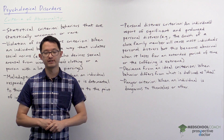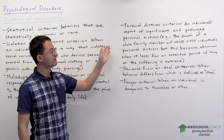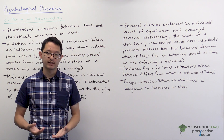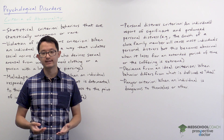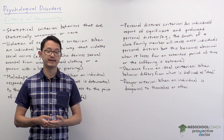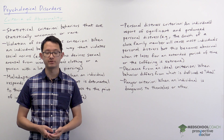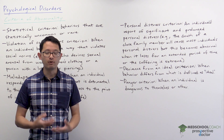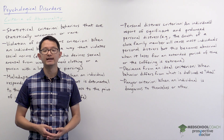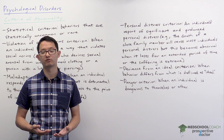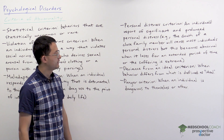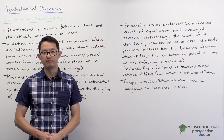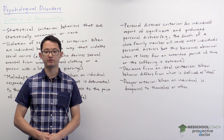Next, we have the personal distress criterion. This is an individual's report of significant and prolonged personal distress. When you think about some psychological disorders such as depression, you may realize that not all of them are going to exhibit behaviors that violate social norms or are maladaptive. Some of these people instead will report intense feelings of personal distress, and that is still considered abnormal and can be categorized as a psychological disorder. An example is when you experience the death of a close family member — there's a very good chance that you will experience personal distress.